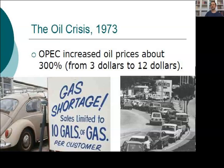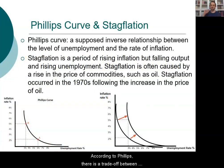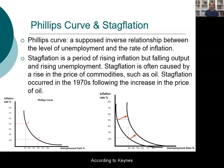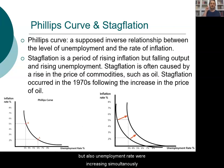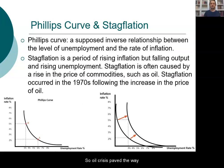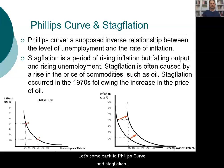OPEC increased oil prices by about 300%, from $3 to $12 dollars. According to the Phillips curve, there is a trade-off between inflation and unemployment. Keynes prioritized reducing unemployment. However, something unexpected emerged: not only inflation but also unemployment were increasing simultaneously — a phenomenon we call stagflation. The oil crisis paved the way for stagflation, and Keynesian policies fell out of fashion.